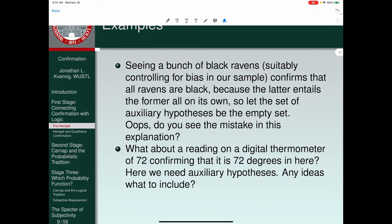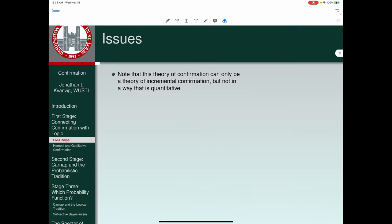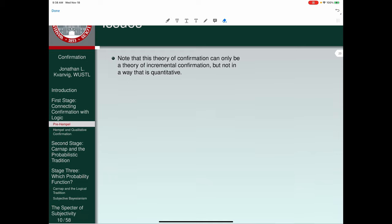What about reading on a digital thermometer a reading of 72 confirming that it's 72 degrees in the room that you're in right now? Here we need auxiliary hypotheses. Any idea of what you're going to include? Presumably something about the design and function of the thermometer and that sort of thing. Note that this theory of confirmation can only be a theory of incremental confirmation, but not in a way that's quantitative. Entailment is an on-off switch, so if you're reading a notion of confirmation off of an on-off switch, all you're going to get is a theory that there's some degree of confirmation going in the opposite direction of the entailment, but the measure of it, you'll have no idea how to do that.